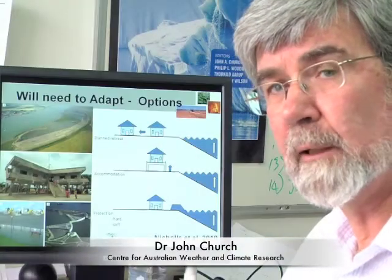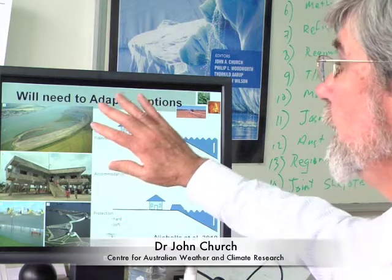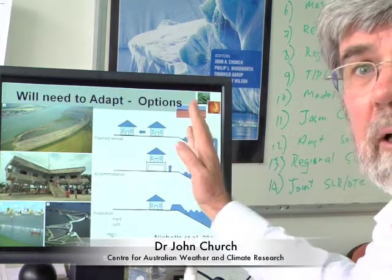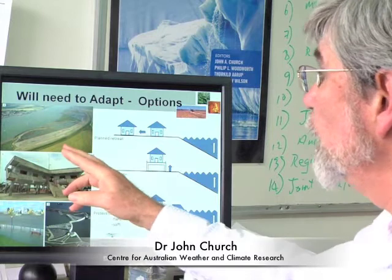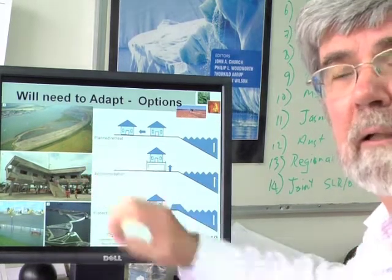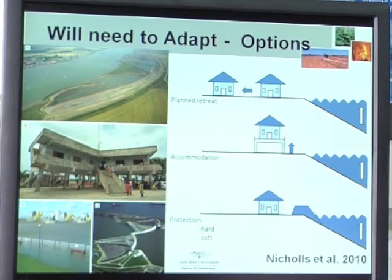Our options for adaptation are basically threefold. Firstly, we can retreat from the coastline — abandon parts of the coastline. This shows an example from the UK where they are actually abandoning parts of the coastline, as it's too expensive to protect every portion.